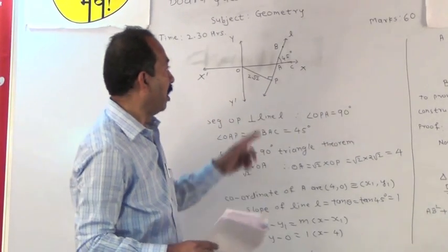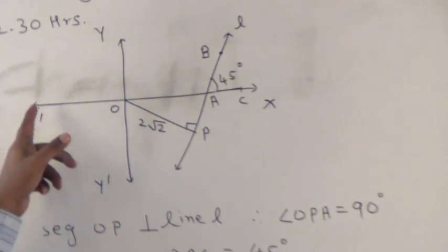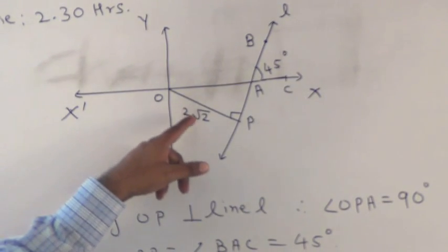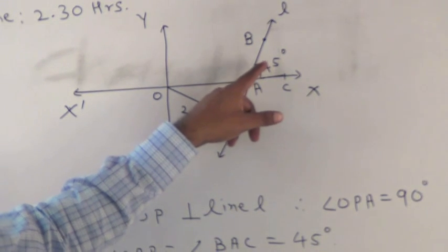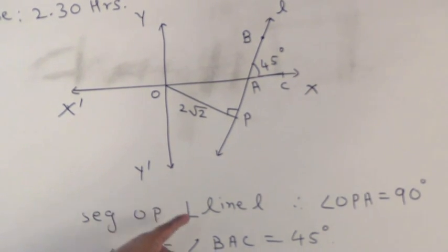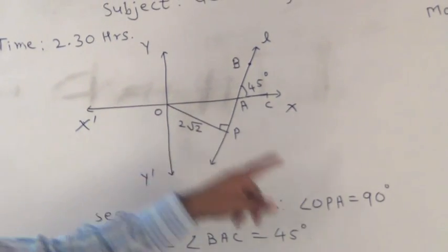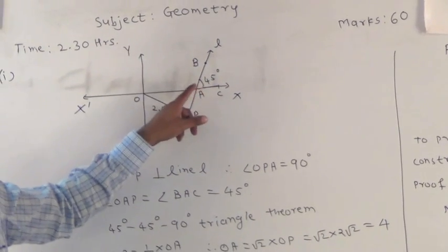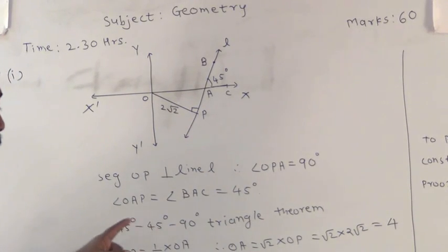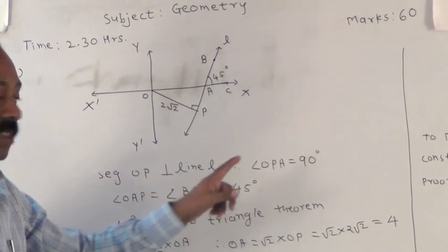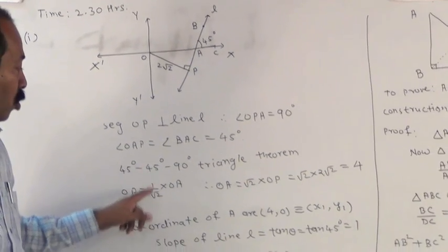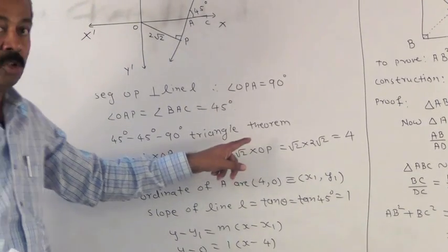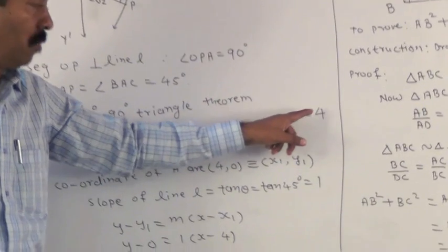From the problem, we draw the appropriate figure. The origin is O, with axes x-x' and y-y'. The distance of line L from the origin is 2√2 and it makes an angle of 45 degrees with the positive x-axis. Segment OP is perpendicular to line L, so angle OPA equals 90 degrees. Angle OAP equals angle BAC, both 45 degrees. By the 45-45-90 triangle theorem, OP equals (1/√2)·OA, so OA equals √2·OP. Substituting OP equals 2√2, we get OA equals √2 × 2√2 equals 4.